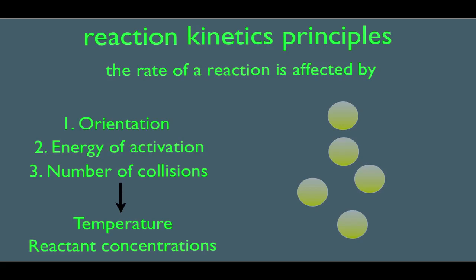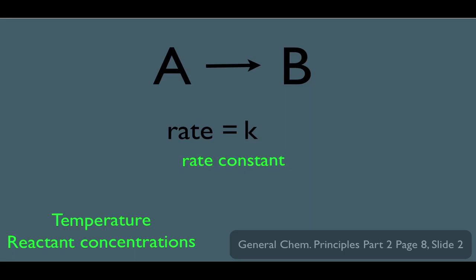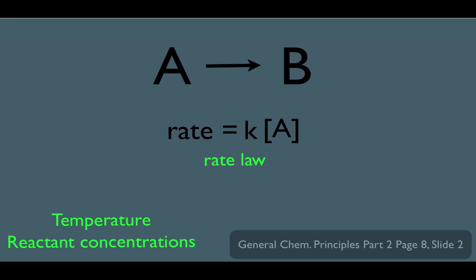This brings us to another kinetic principle: the rate law. A rate law incorporates temperature and reactant concentrations. For example, for a reaction A going to B, the rate law would be rate equals K, the reaction rate constant, times the concentration of A. K is a value that depends upon temperature — the higher the temperature, the higher the K rate constant. The higher the concentration of A, the higher the rate. If there is only one species in your rate law, such as A, then we say this is a first-order reaction.